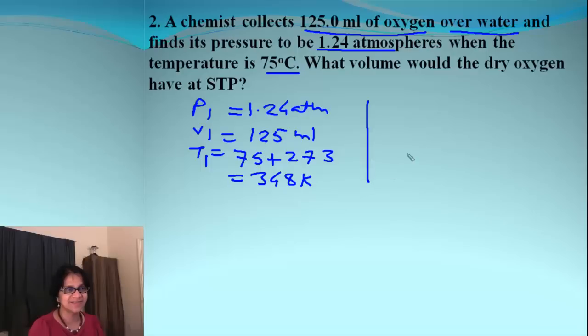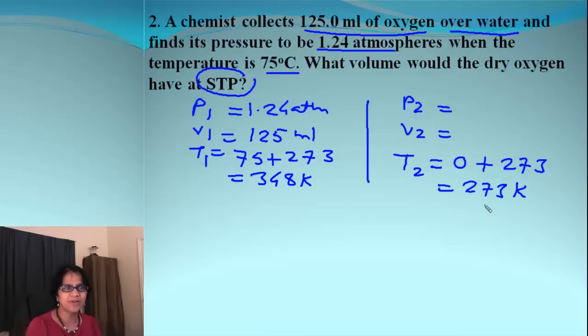Let's get the second set, P2, V2 and T2. The temperature at STP, which is standard temperature and pressure, will be 0 degrees Celsius or when we add 273, that becomes 273 Kelvin. Volume we have to find out. What about pressure? Pressure for STP is 1 atmosphere and we could have easily used 1 atmosphere, but keep in mind we are collecting the gas over water. That means we need to make some corrections with water vapor.